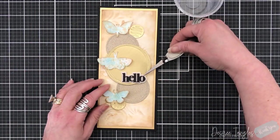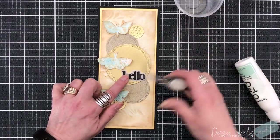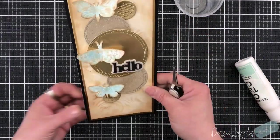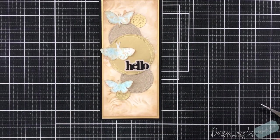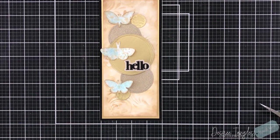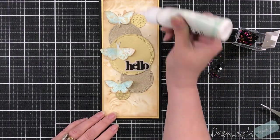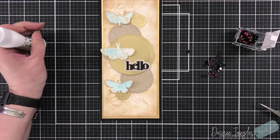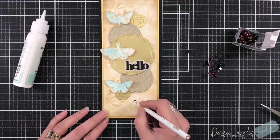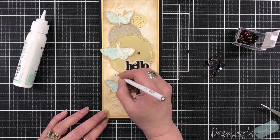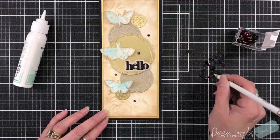We'll add just a few gems. These are some iridescent gems in my stash, and I'm just setting a few of those around the front panel as well, just to add a little bit of darkness and to pull out the black frame and the sentiment that is in black as well. And that is our card.